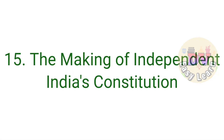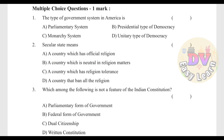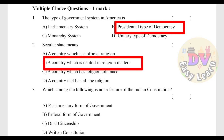Chapter 15: The Making of Independent India's Constitution. Question 11: The type of government system in America — Answer: Presidential type of democracy. Question 12: A secular state means — Answer: A country which is neutral in religious matters. Question 13: Which of the following is not a feature of the Indian Constitution? — Answer: Dual citizenship.